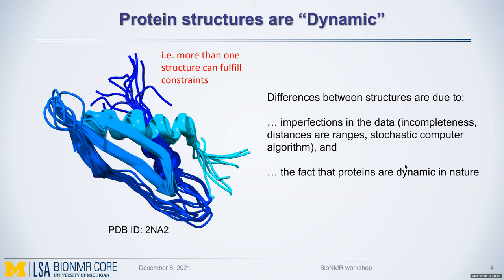Some of these variations come from imperfections or incompleteness in constraints. Sometimes the termini don't have very good constraints, and it's a stochastic process — totally acceptable in NMR. We have multiple ensembles that can fit the same data; we use simulated annealing to get to the structure, which is why you can end up with various different final solutions. Proteins are dynamic in nature, and that is why you run these experiments: to study which portions are dynamic.